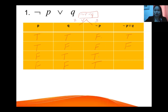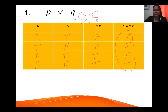Then true OR true, therefore true; true OR false, therefore true. So the overall truth values are true, false, true, true. Since we have both true and false in the final column, this is a contingency.